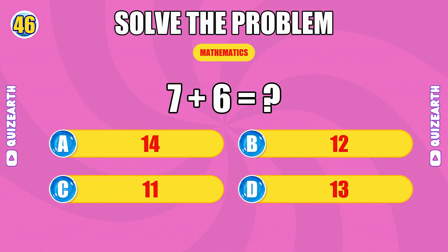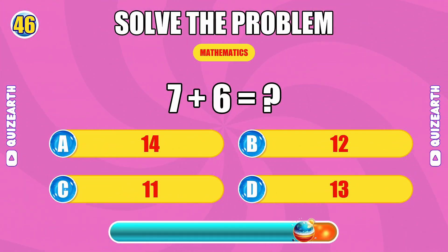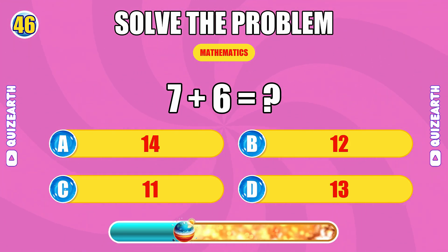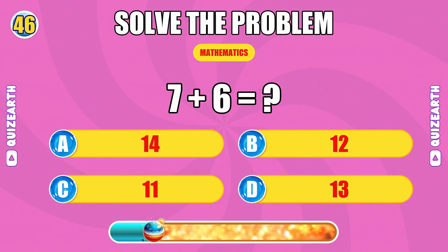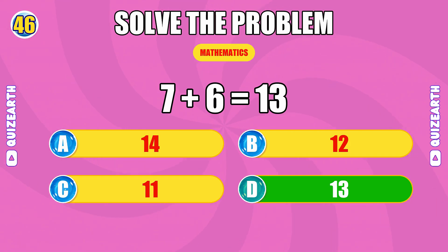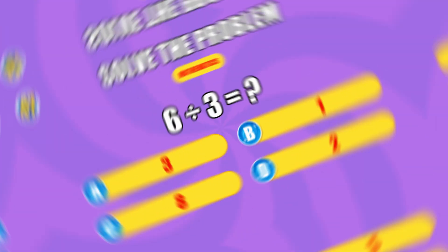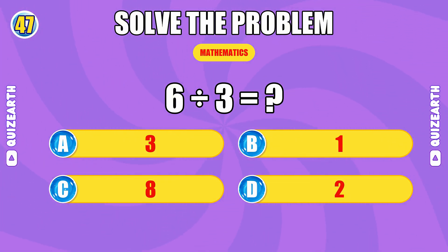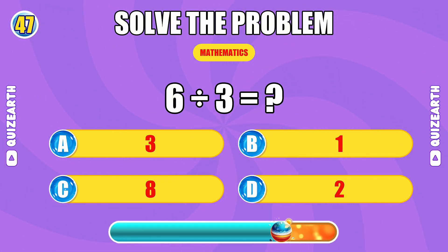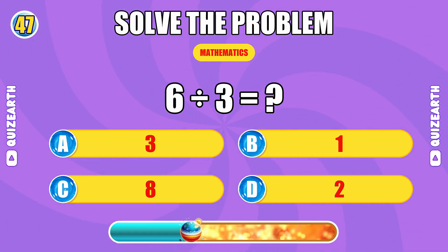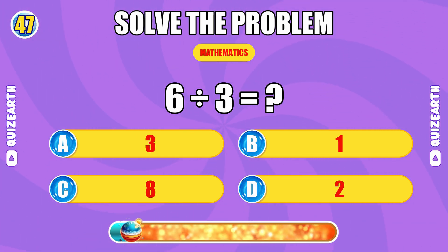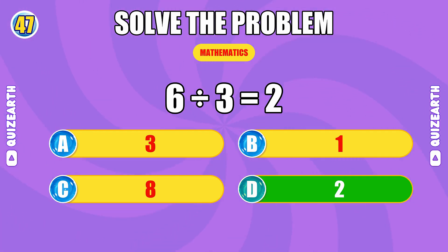What is seven plus six? Almost there — the answer is 13. How much is six divided by three? Elite speed — the answer is two.